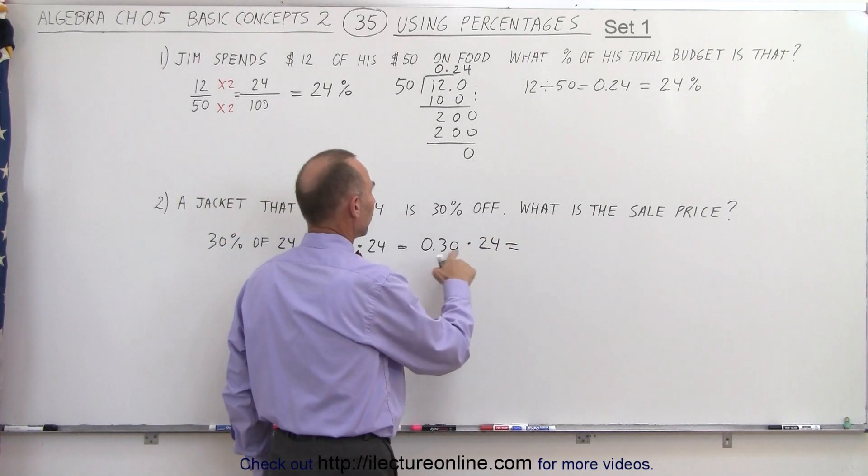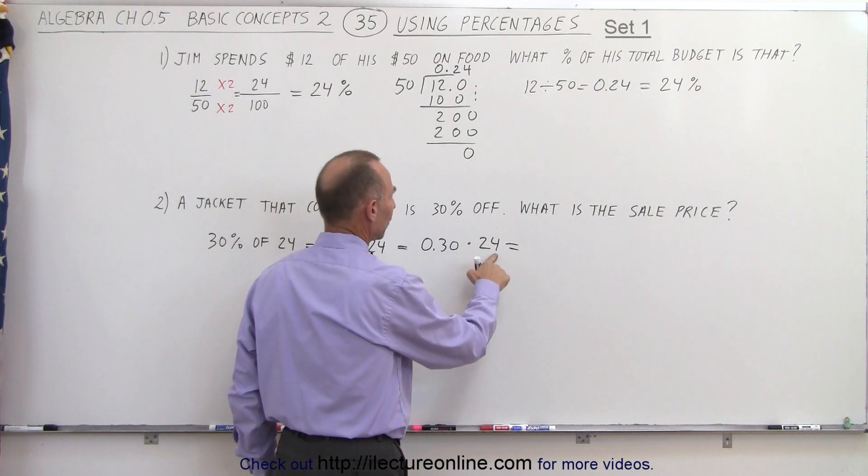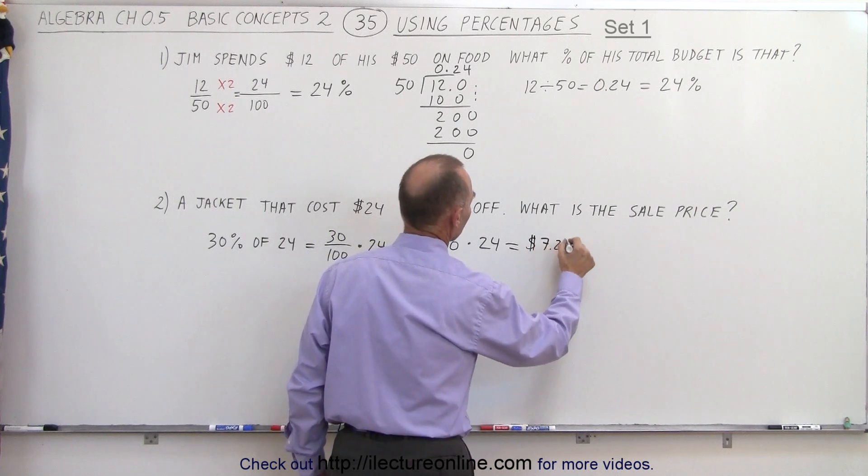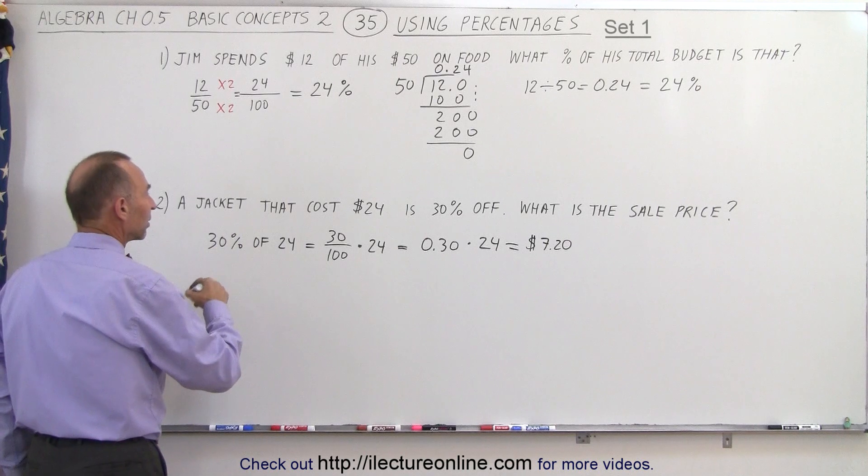So 0.3 times 24: 0.3 times 20 is 6, 0.3 times 4 is 1.2. That gives us $7.20. That means the original jacket costs $24.